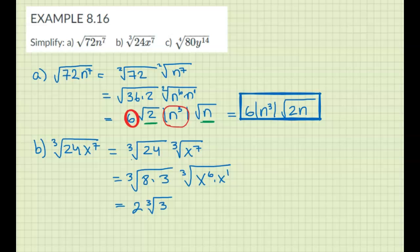Cube root of x to the 6 is x to the 2, because you do 6 divided by 3. But this one has to stay inside, so this stays inside the radical, that stays inside the radical. So yeah, cube root of x to the 1.